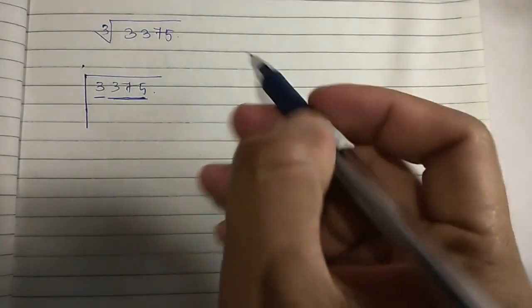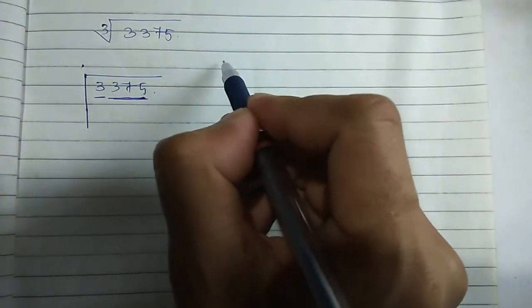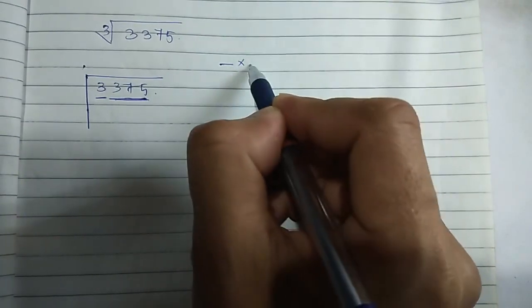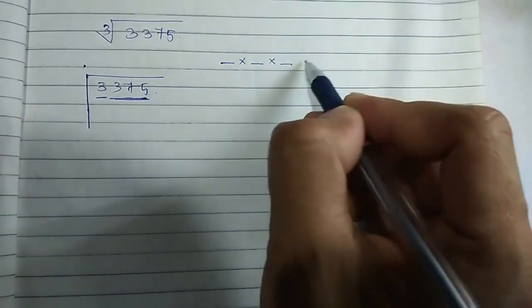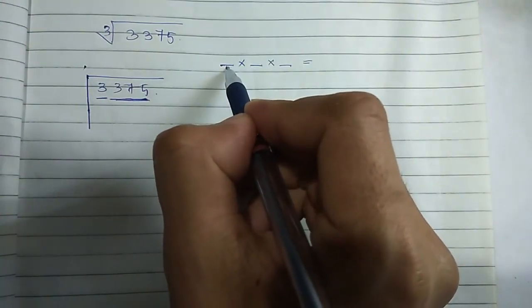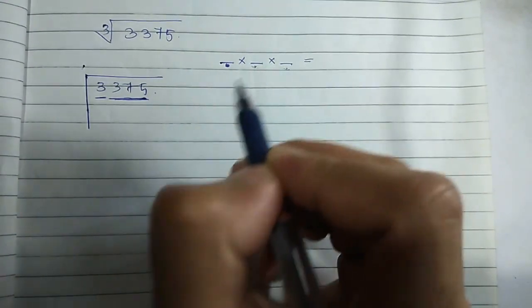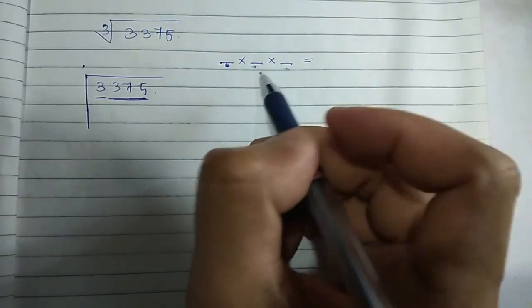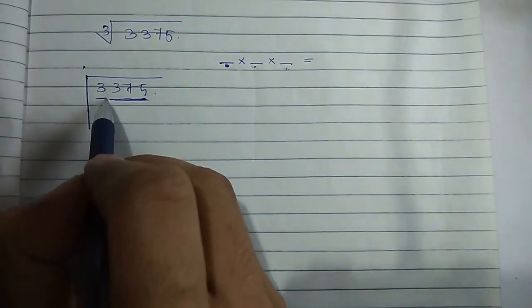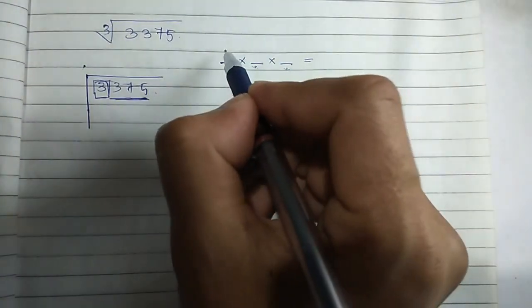It is similar to a square root but a little bit more complicated. In the case of a cube root, we take three digits and multiply with three digits. If we use a number, we must use that same number in all three places. For the single digit group, we need to find a number whose cube is 3 or less than 3.